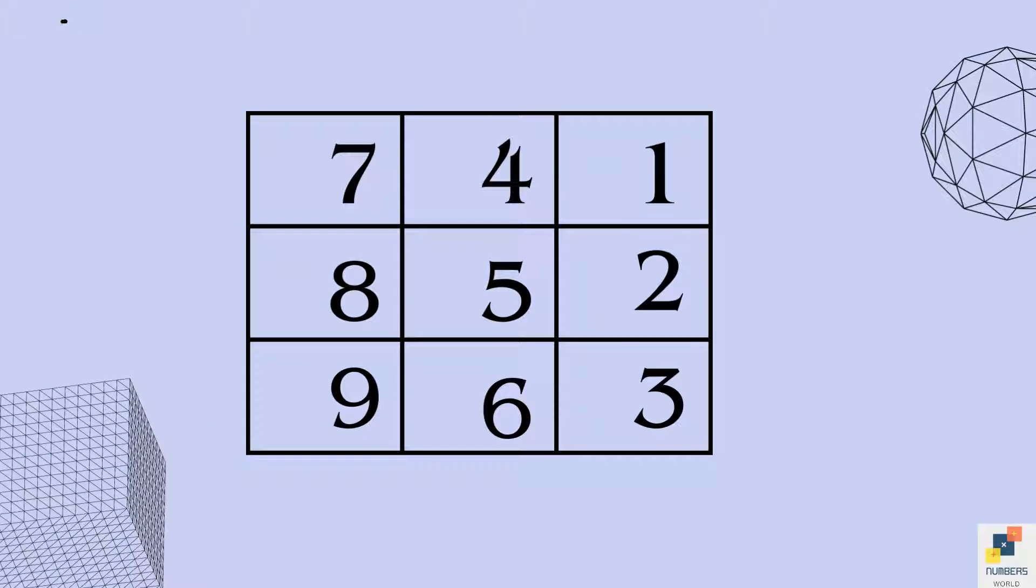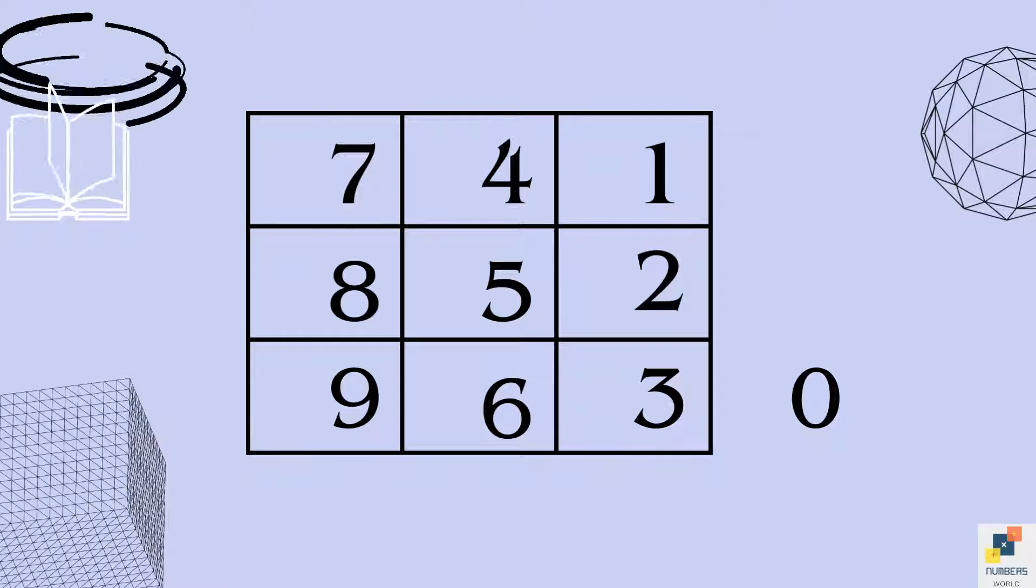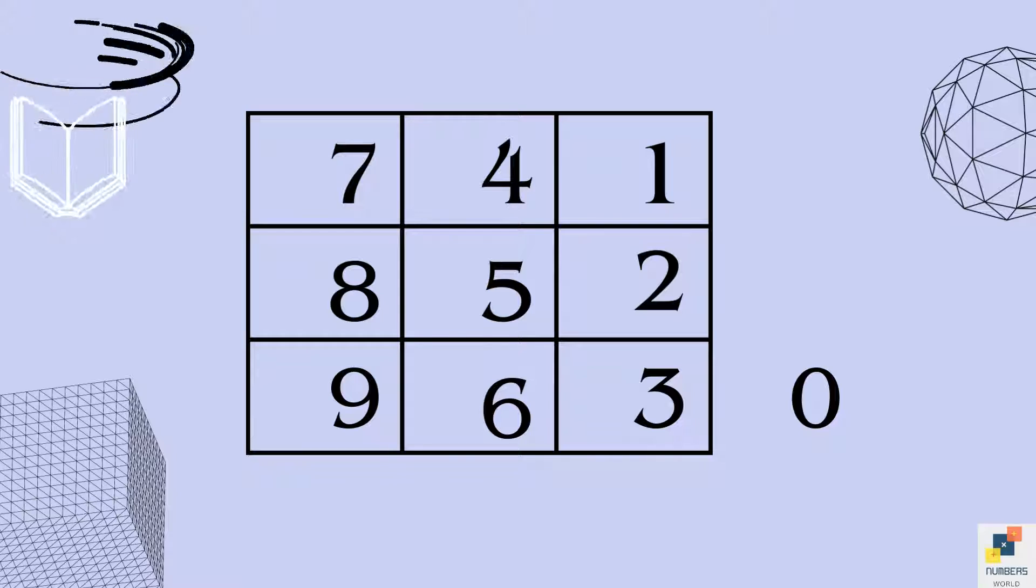So all these numbers will be written at units place. You must be thinking why we have not written any 0. We will write it but we will write it out of the grid.